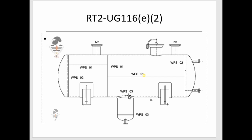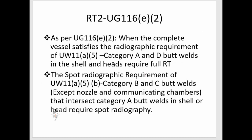Category B and C butt joints in nozzles and communicating chambers do not require any radiography — the code gives an exemption for those. So a vessel is said to be RT2 when it satisfies the requirements of both UW11A5 and UW11A5B.